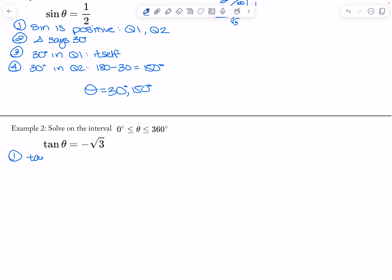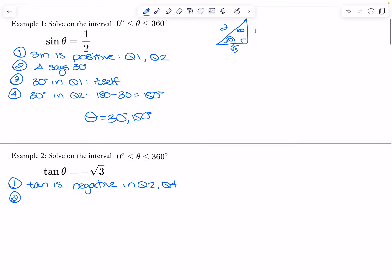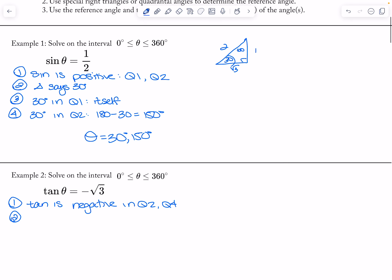Okay, again I'll do the same exact thing. Tangent is negative in quadrant two and quadrant four. For root three over one, that would be 60 degrees, so my triangle would say 60 degrees — because that's my opposite over adjacent.